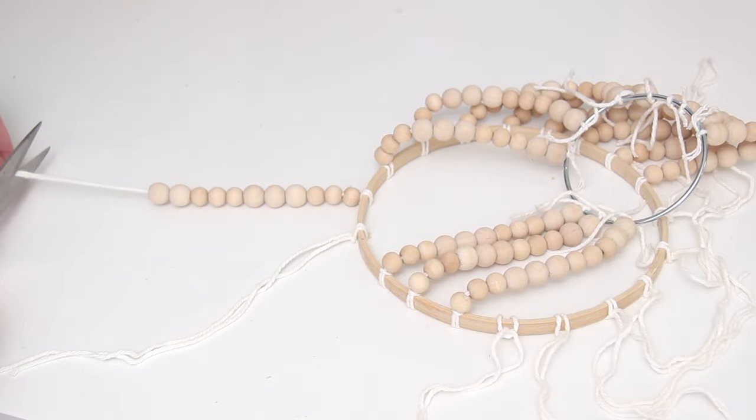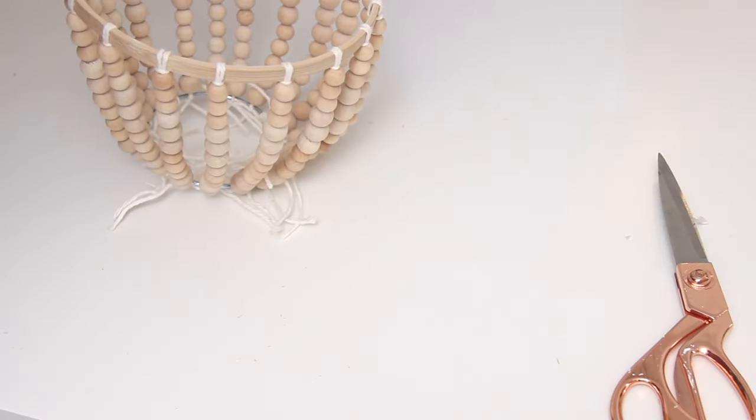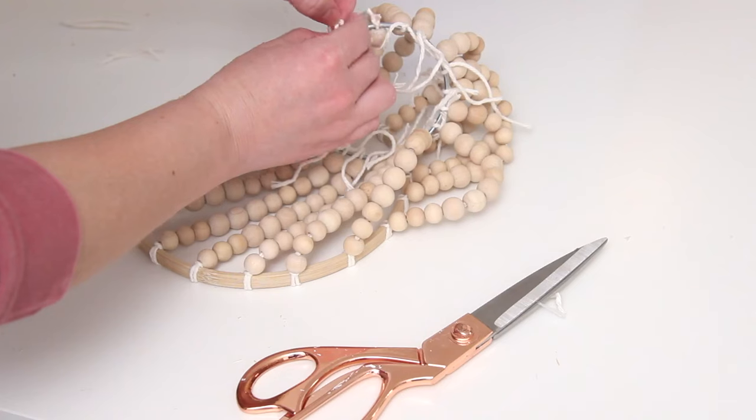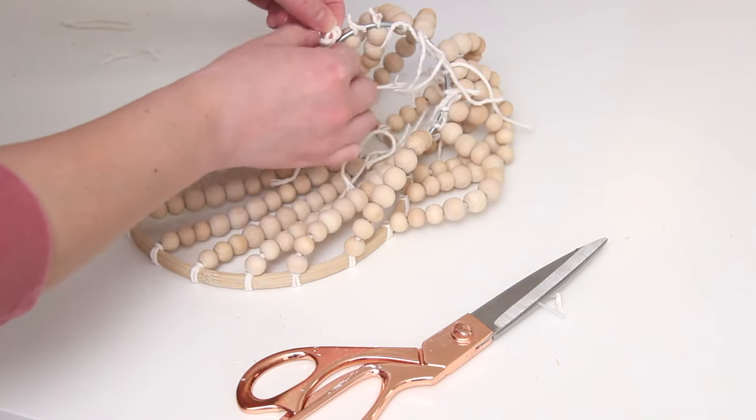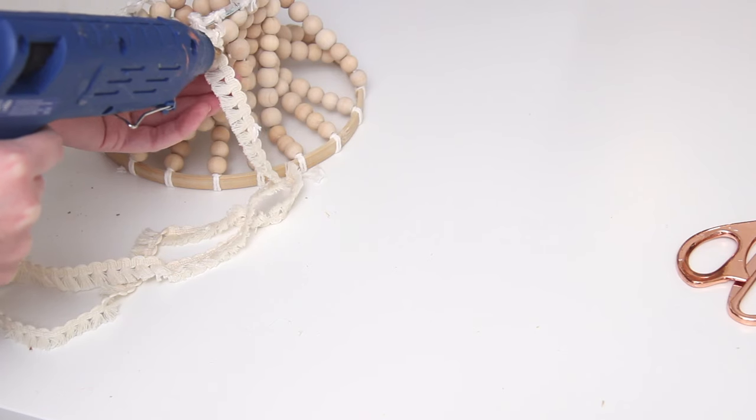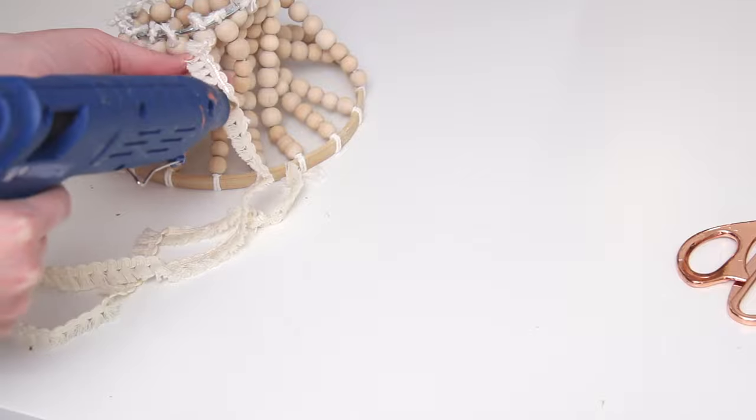So like I said, I just continued stringing on 11 beads to each piece of string and then tying it to that little hoop. Once it was all done, I flipped it over and then I actually tied another knot because I wanted to make sure that it was not going to go anywhere, and I snipped off the ends.